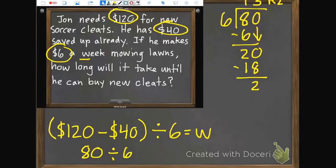Earlier in the chapter, we learned how to interpret our remainders. So would it make sense that it will take him $13 remainder $2 weeks? No. So we're going to go up to our next whole number. He's going to need to mow lawns for 14 weeks. Because if he only does it for $13, he's still going to need $2 more. So he needs to do it that extra week. So it will take John 14 weeks until he can buy his new cleats.